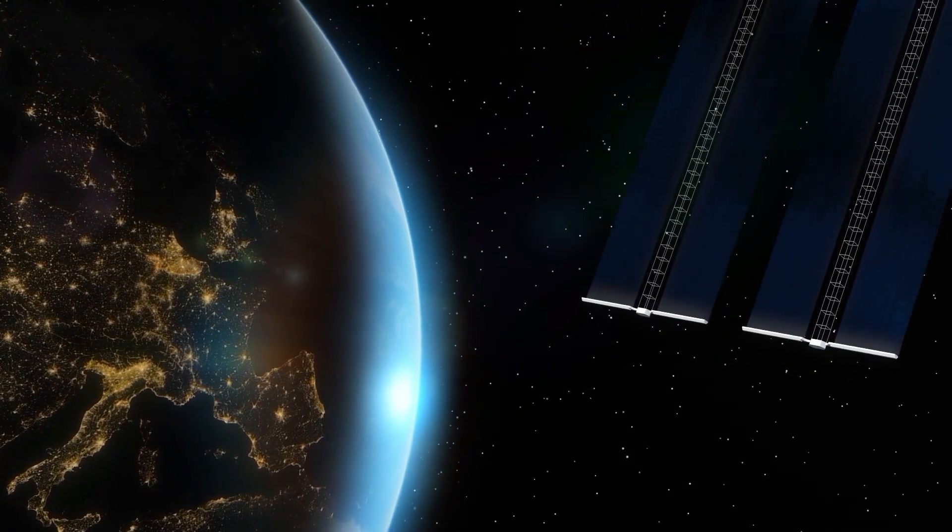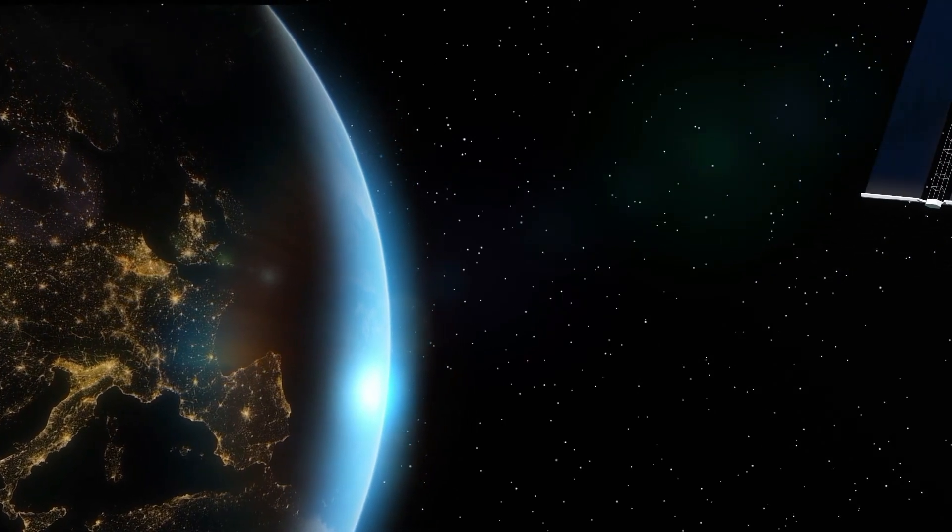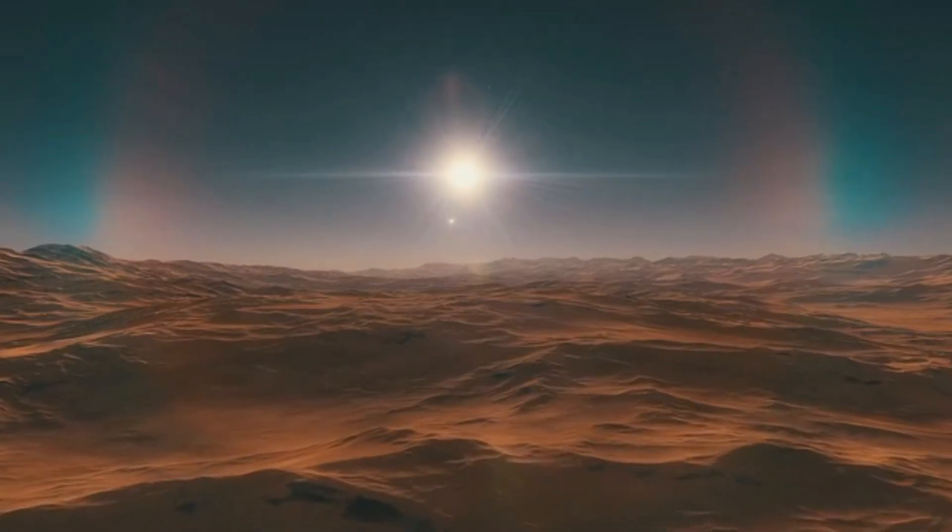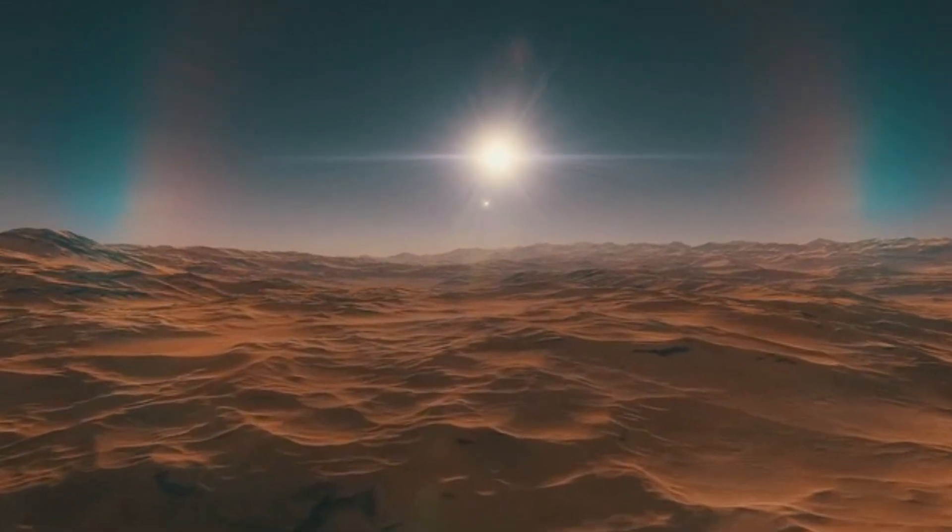But thanks to the JWST's groundbreaking observations, this narrative has now shifted. The telescope's powerful instruments detected oxygen, methane, and carbon dioxide in Proxima b's atmosphere.